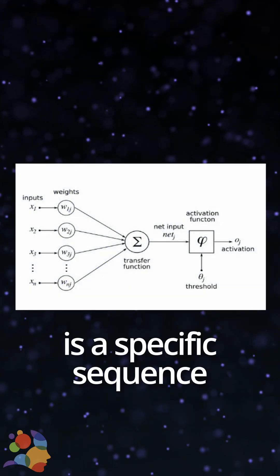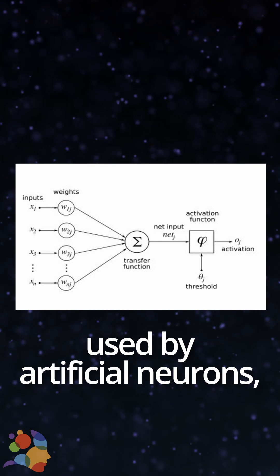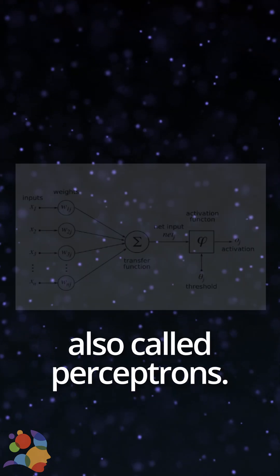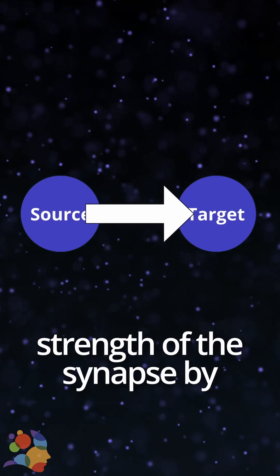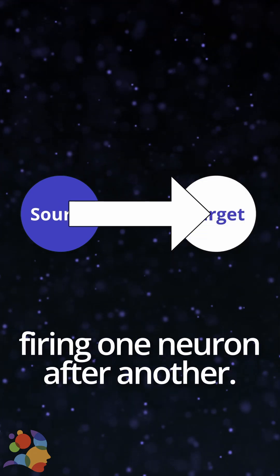Hebbian learning is a specific sequence used by artificial neurons, also called perceptrons. Hebbian learning controls the strength of the synapse by firing one neuron after another.